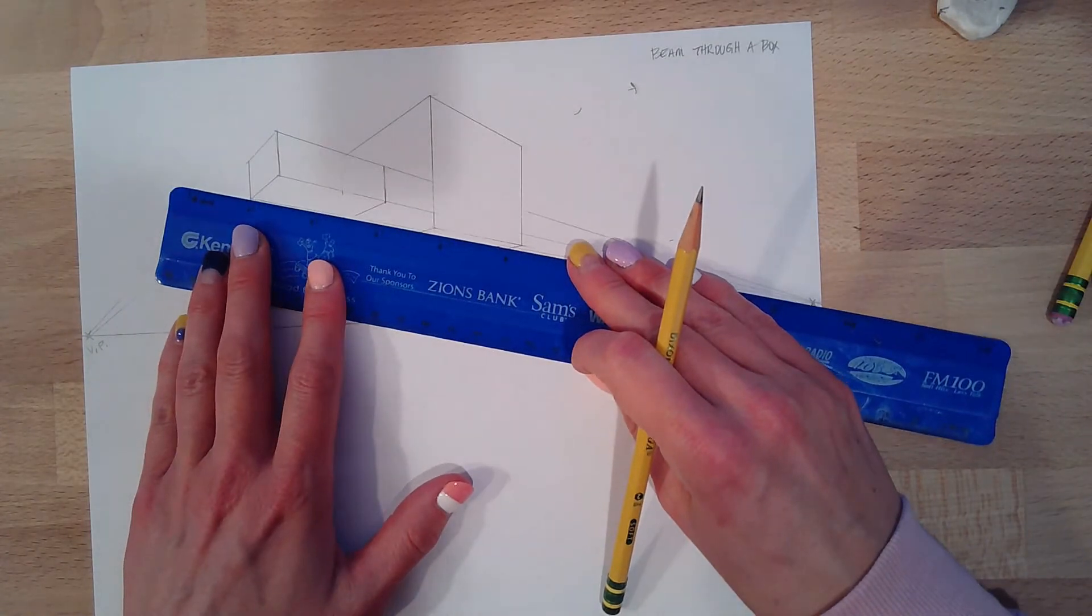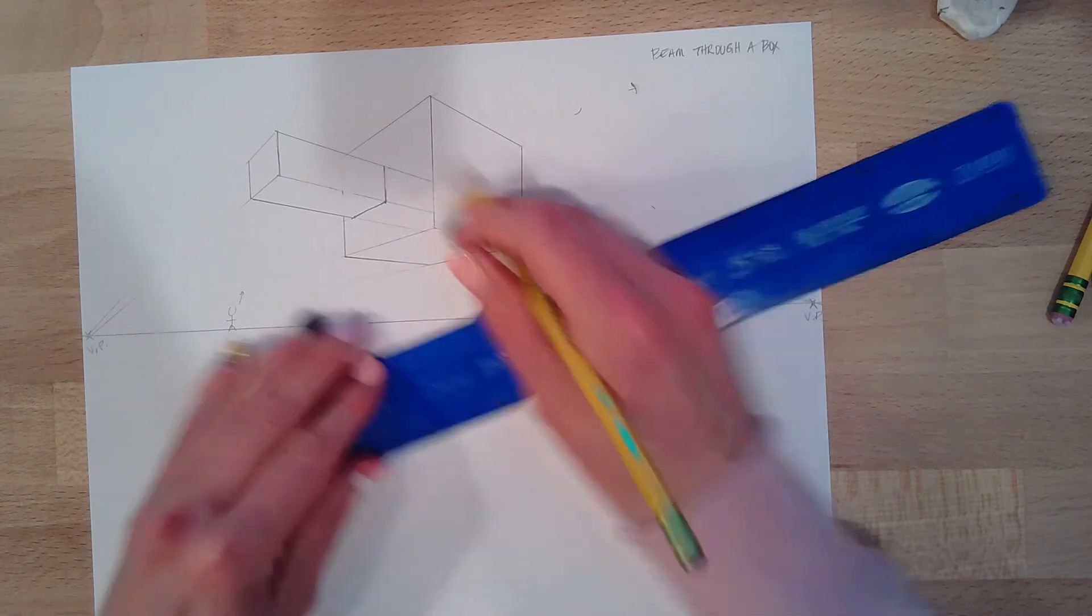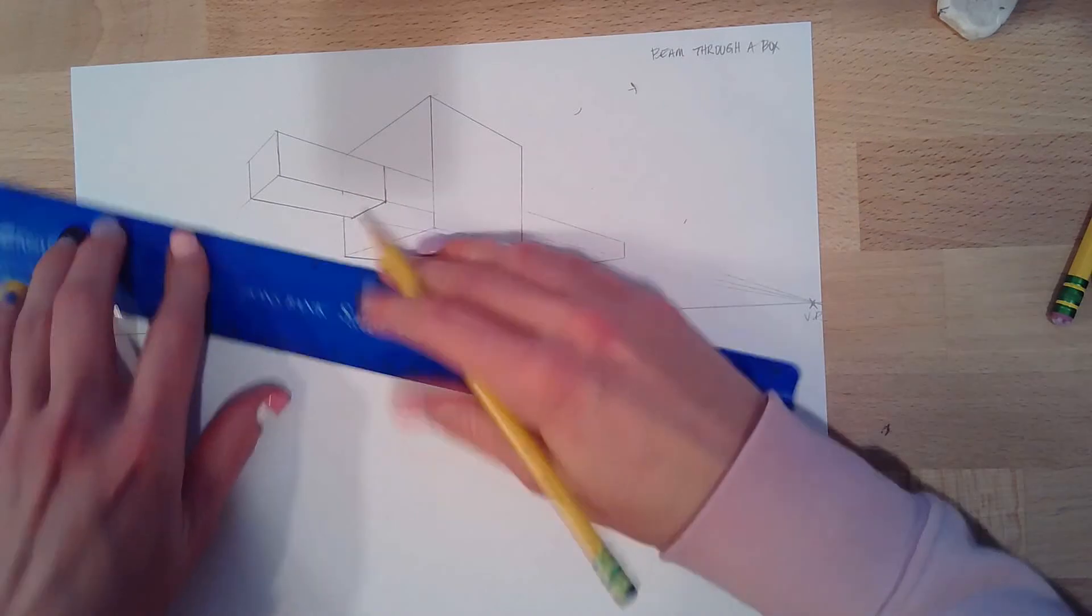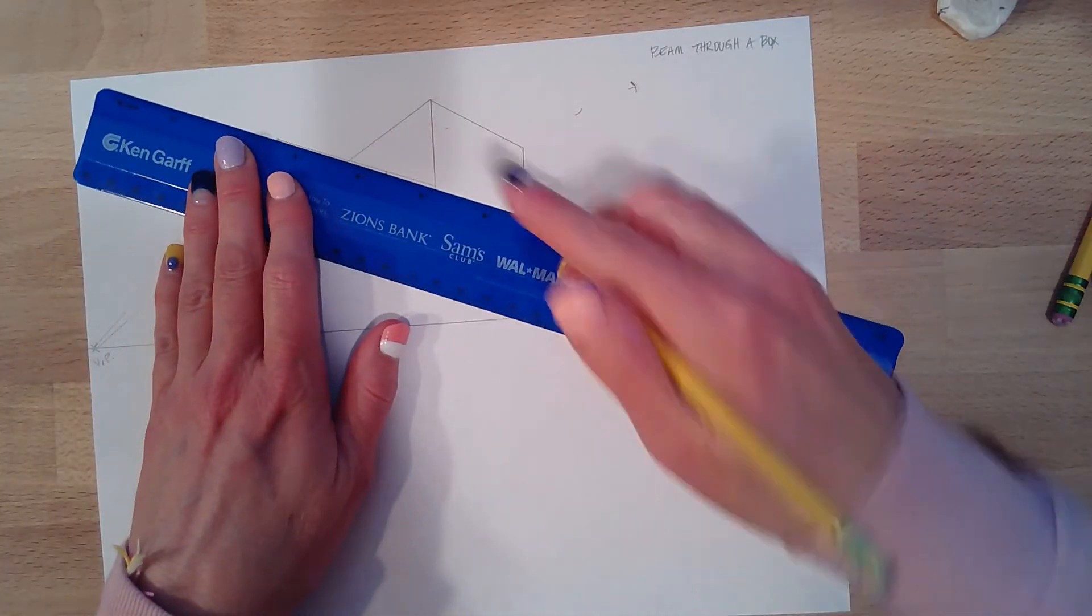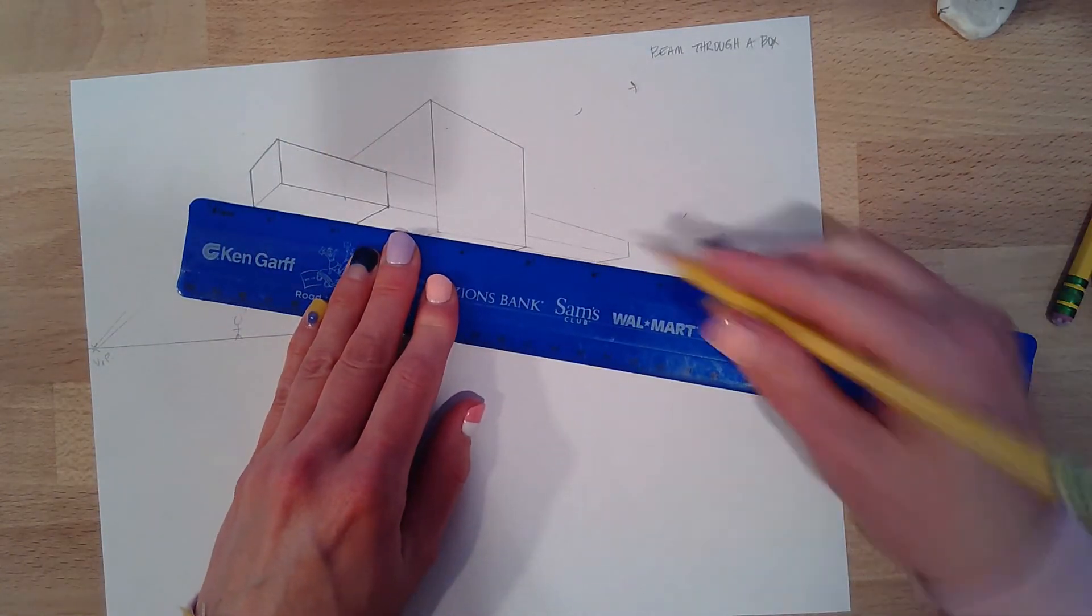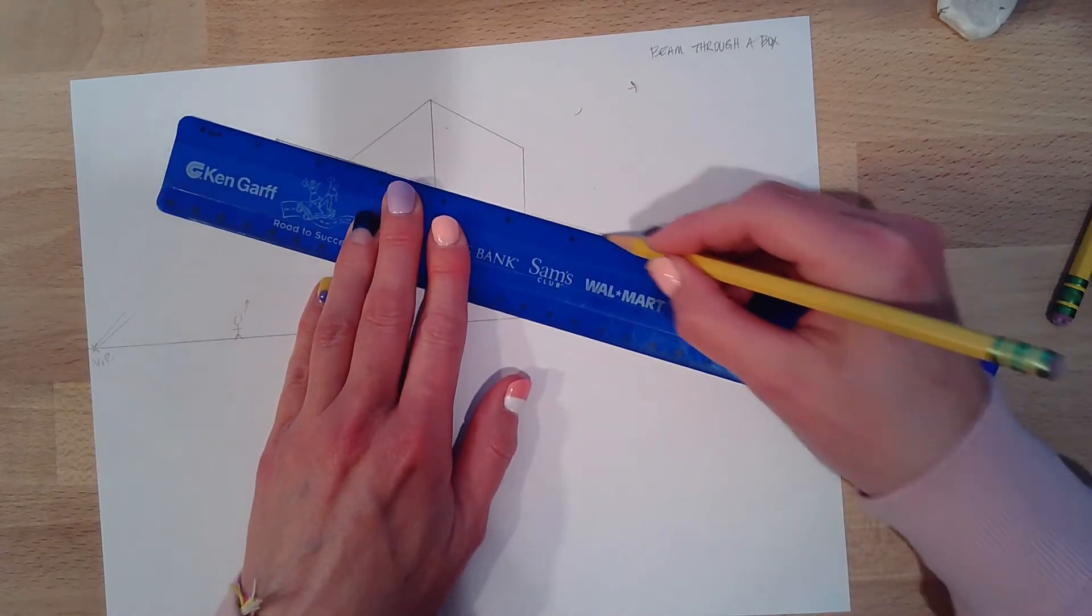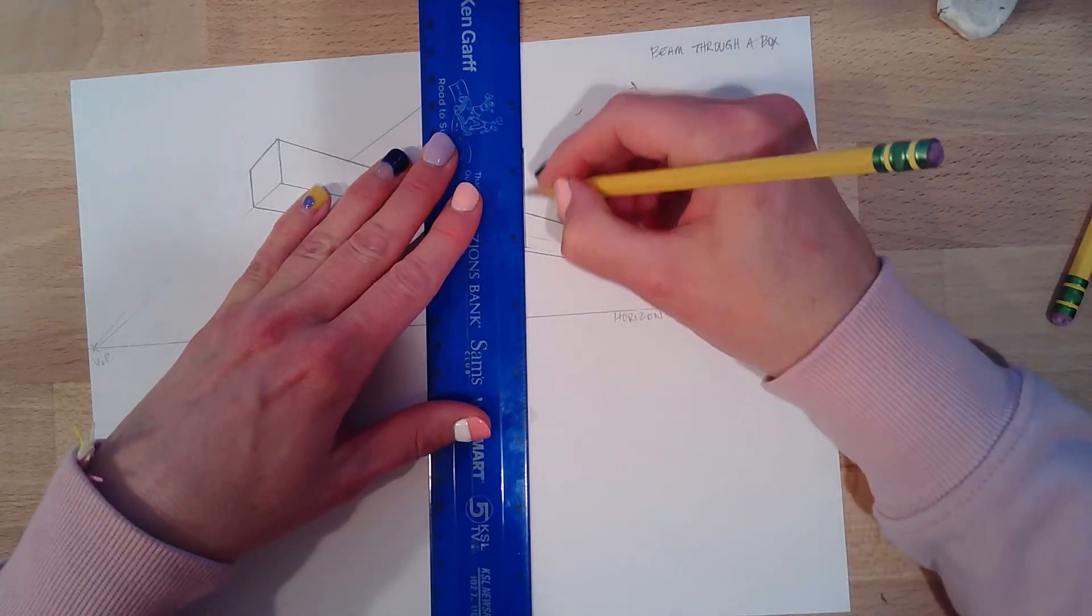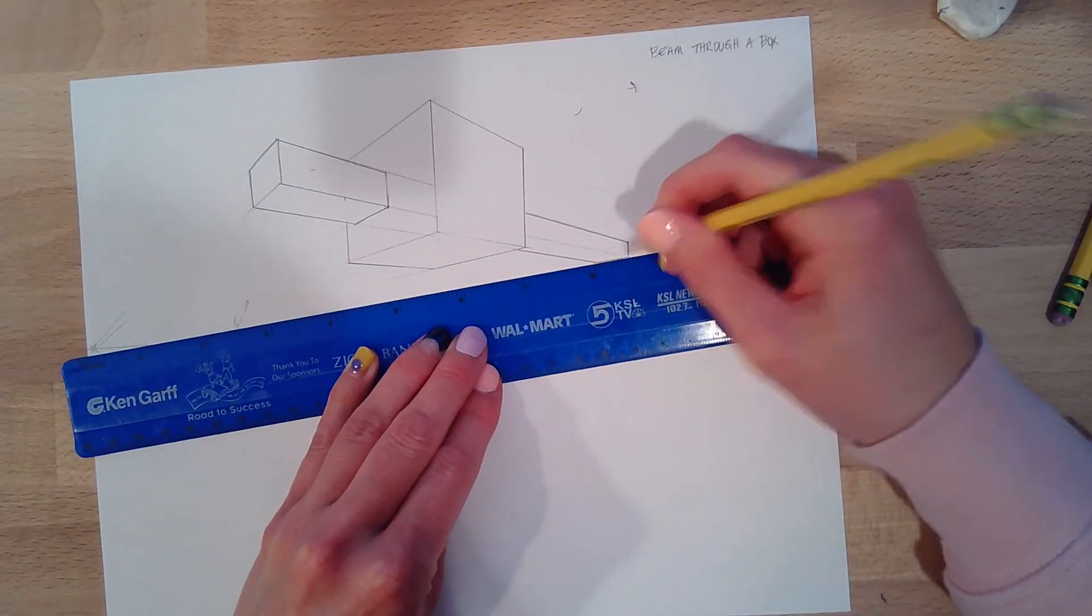Now I'm going to darken up my lines so we can see exactly what's going on. Clean her up. And for time purposes, I'm not going to erase too much, because it's not fun watching somebody erase lines. But I would love for you to erase your lines, make that look nice and clean and finished. And sometimes I'll go back through with ink when I'm feeling froggy. And that looks really good.